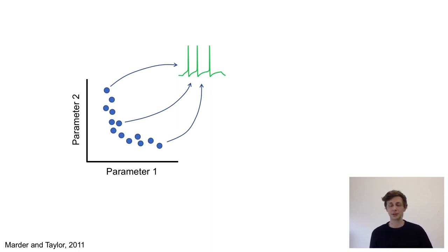This parameter degeneracy has been observed both theoretically and experimentally and is believed to underlie the robustness of neural systems to perturbations.